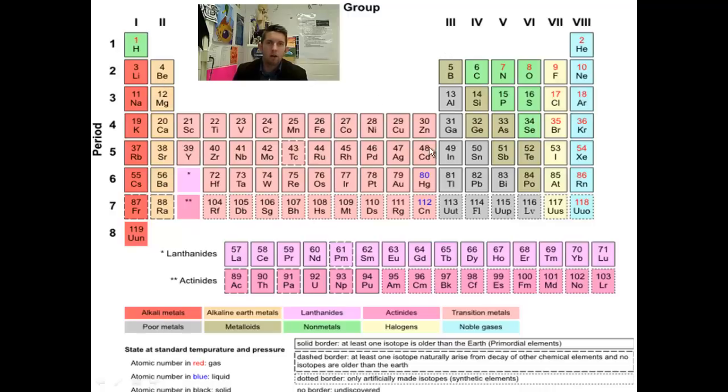You've got the transition metals in the middle. These are going to be your poor metals. Going along the stair step, we have metalloids, which are kind of metal, kind of not. The non-metals here, of which hydrogen is one. But remember, we put it down here because of that one valence electron. The halogens in group number seven. And finally, the noble gases in group number eight.